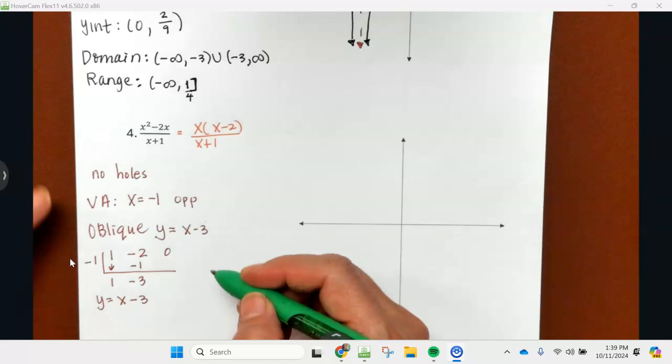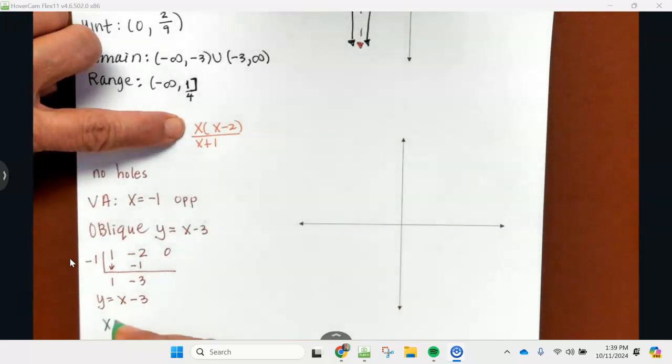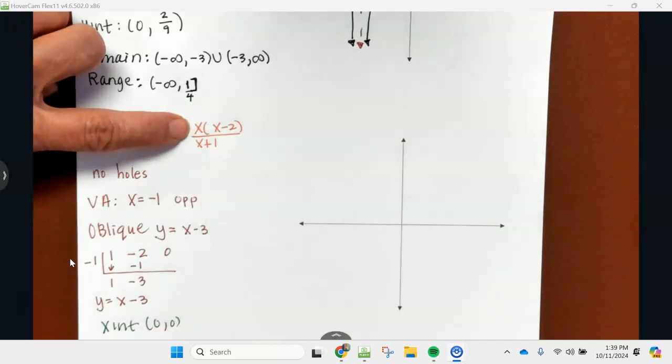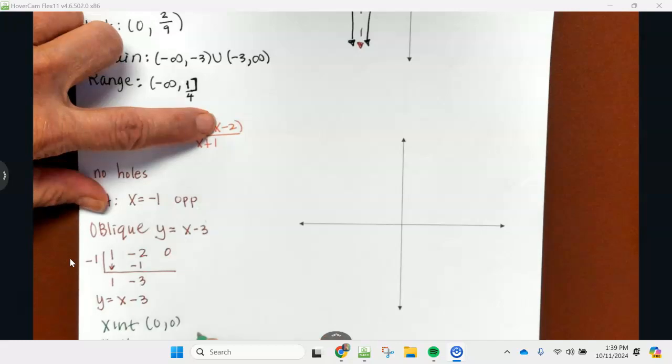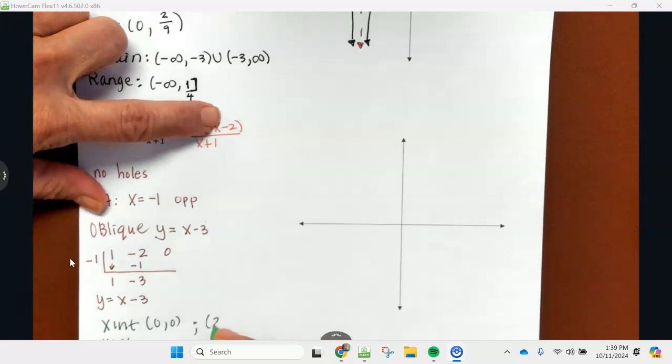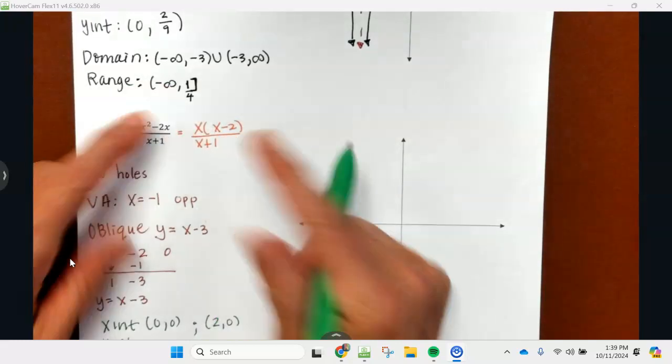X-intercepts: I'm going to have an x-intercept at zero zero because I have a single x out there. That's a y-intercept also, and then we're going to have one more x-intercept at two zero. Both of these are to the first power, so just S and S.